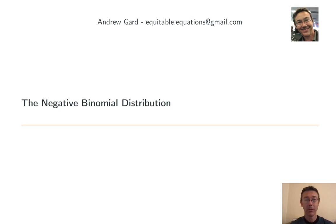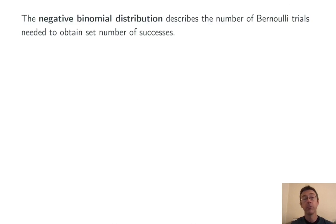Hey everybody, today we're talking about the negative binomial distribution. This models the number of Bernoulli trials needed to obtain a set number of successes.